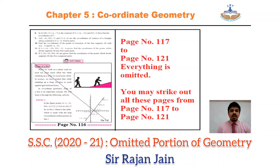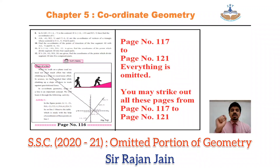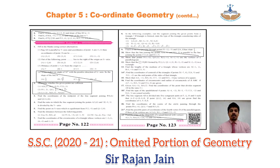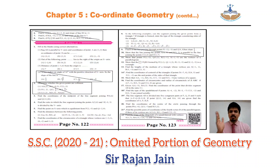As far as chapter number 5 — coordinate geometry — is concerned, the last part of the chapter: directly come to page number 116 — slope of line is omitted. The entire concept of slope of line — you can strike that out. From page number 117 till page number 121, everything is omitted, including pages 117 and 121. On page number 122, top of the page, questions 6, 7, and 8 of your last practice set are omitted, since that entire practice set is based on slope of a line.